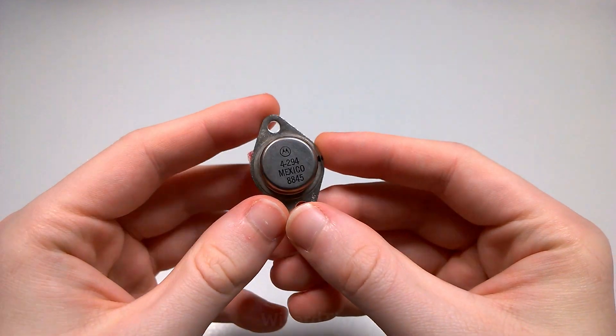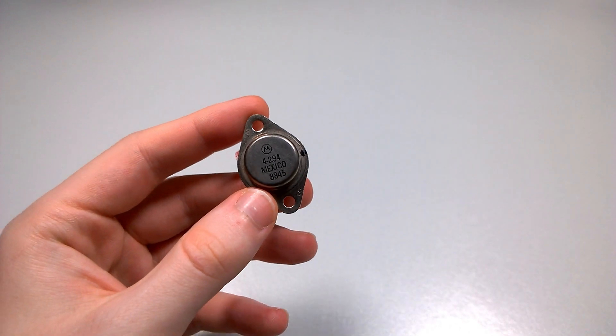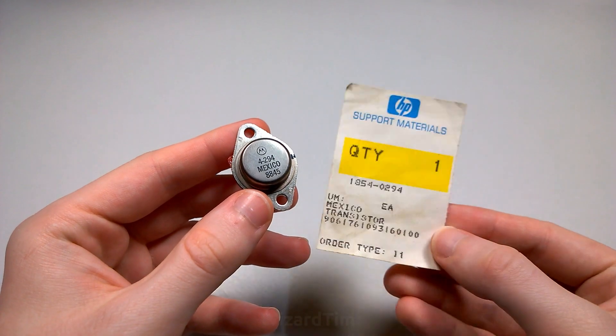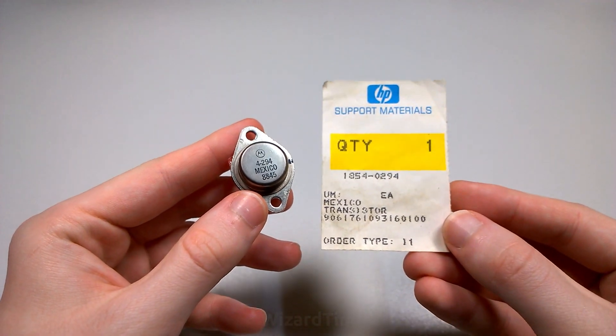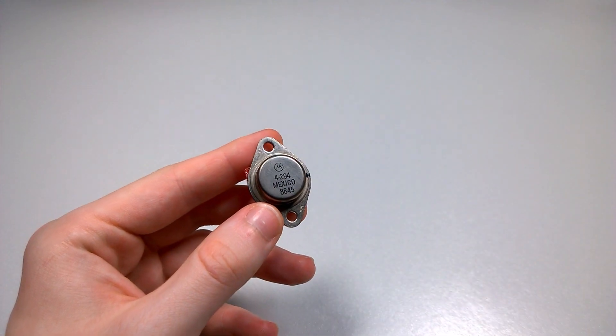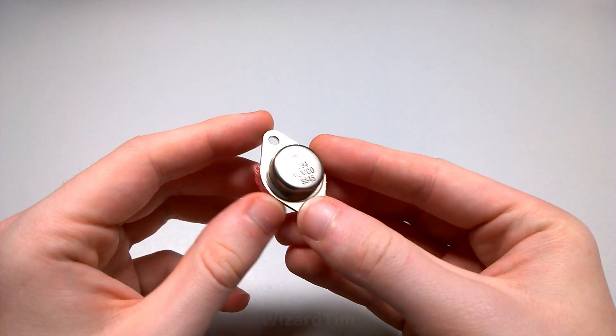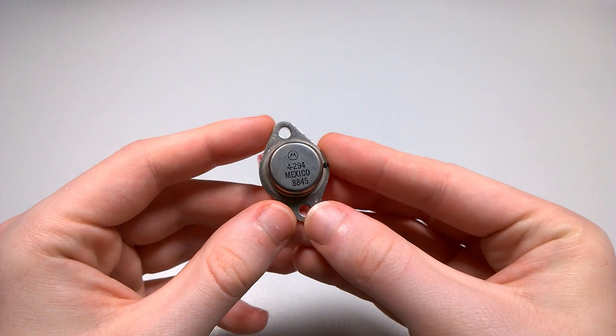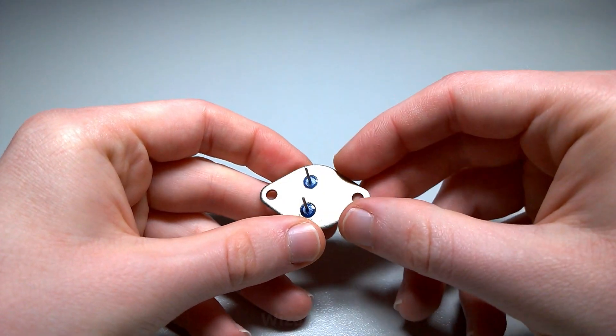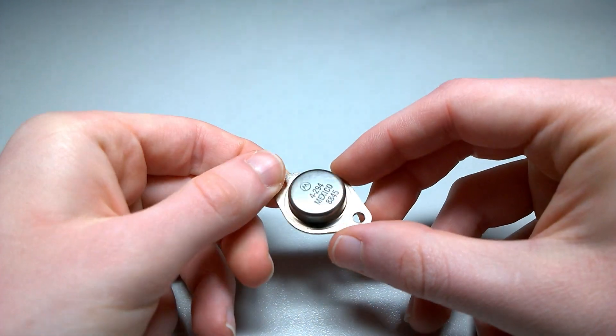I'm in the need of some TO3 transistors, like this one here. Although this one here is a genuine HP spare from Motorola, it's some sort of BJT transistor from 1988, so I don't particularly want to use this one. But this is what a TO3 transistor looks like if you haven't seen one before.